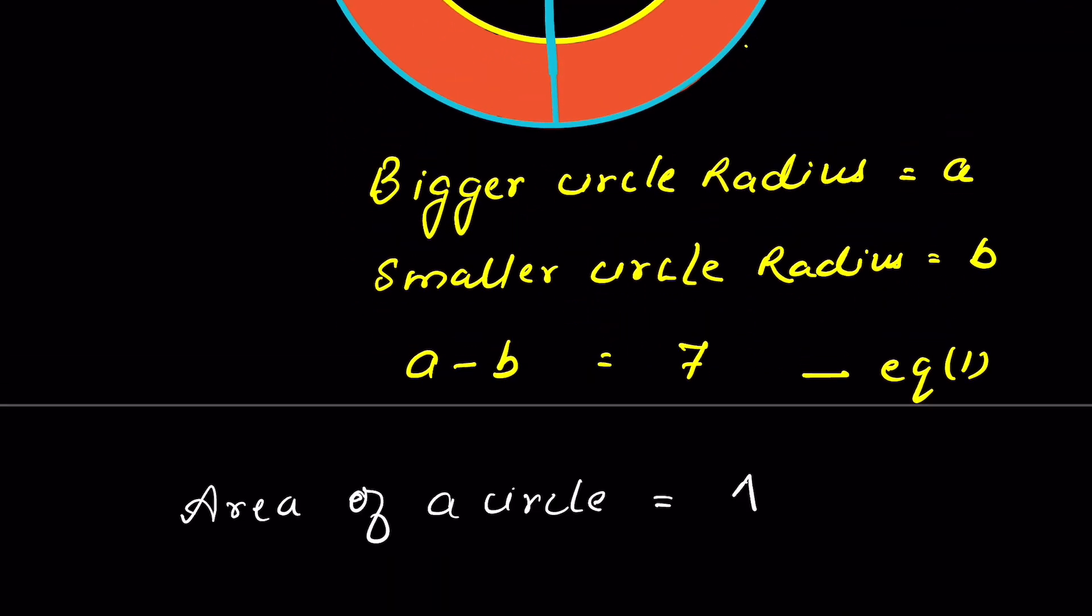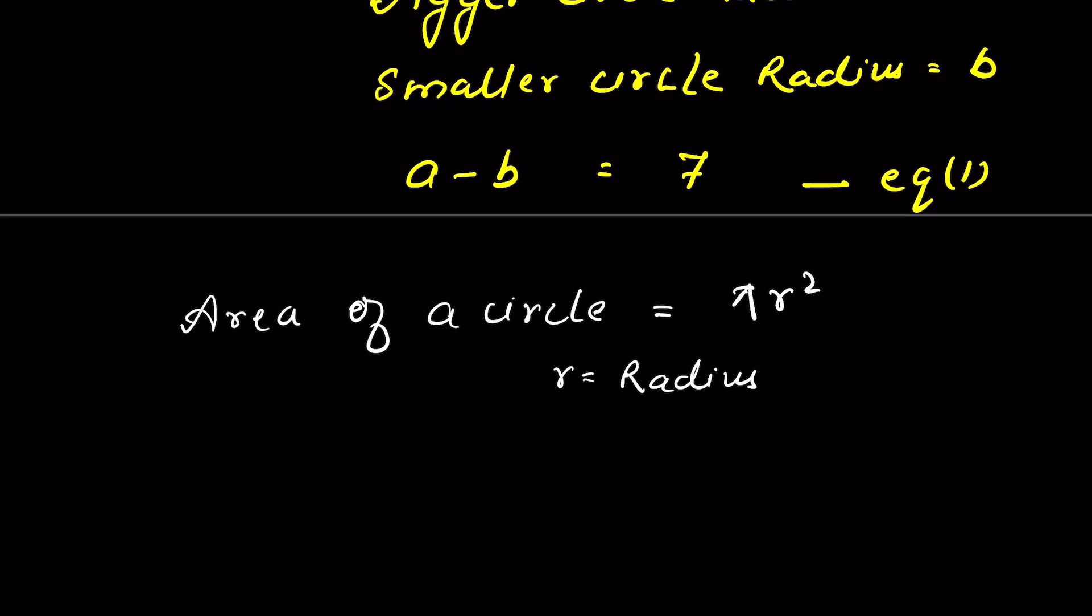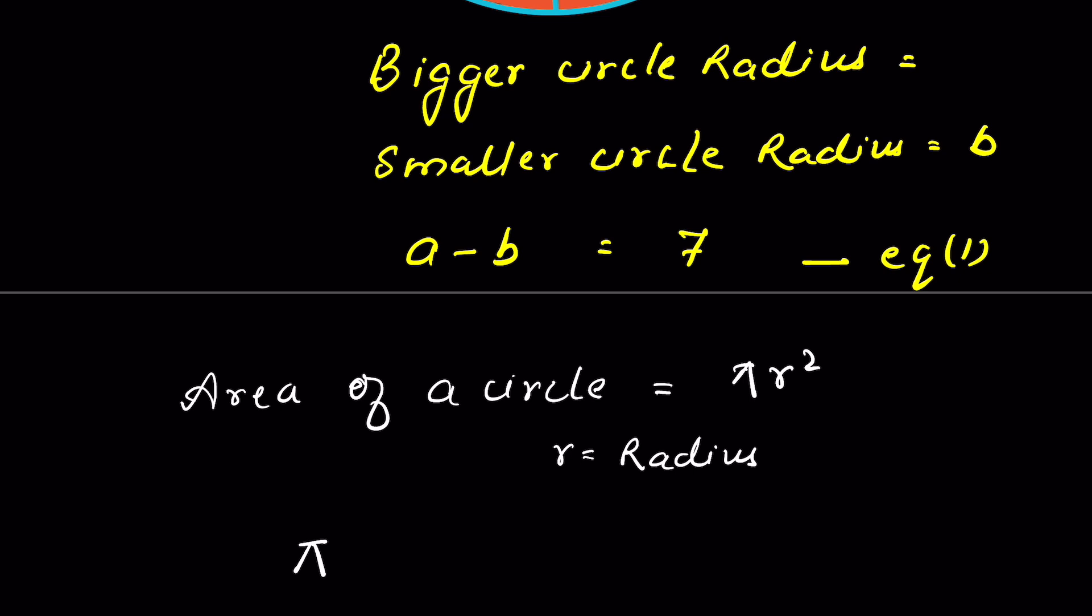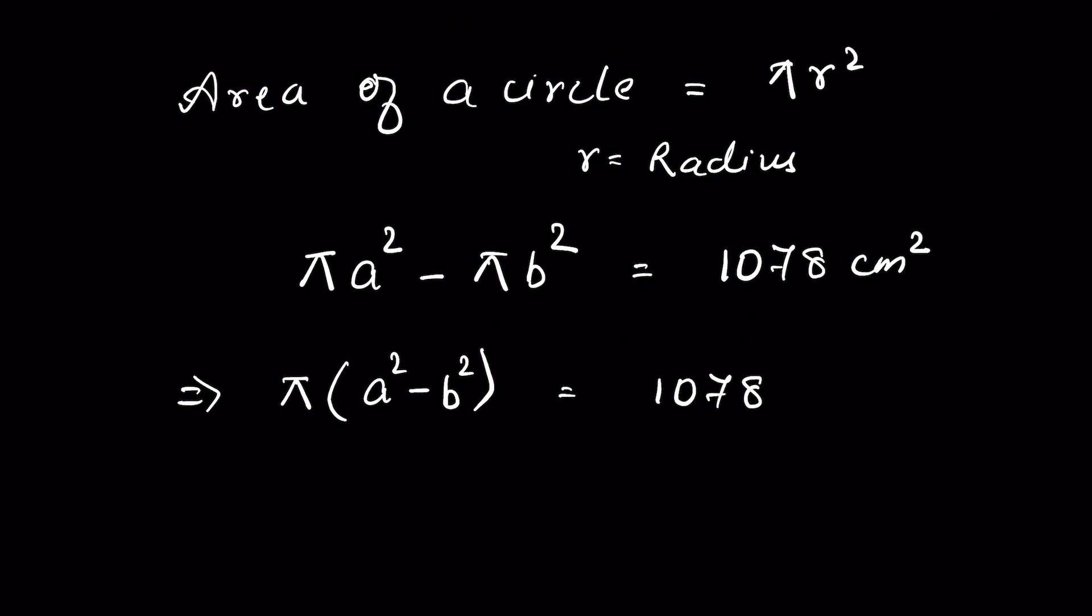Now area of a circle is πr² where r is the radius. As per the question, the difference between the areas of the bigger circle and the smaller circle is 1078 cm². That means πa² minus πb² is equal to 1078 cm². We can take π common: a² minus b² is equal to 1078. π is 22 upon 7 and this is in the form of difference of squares. Here we can write it as (a + b) times (a - b) is equal to 1078.